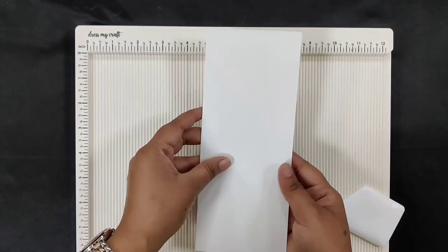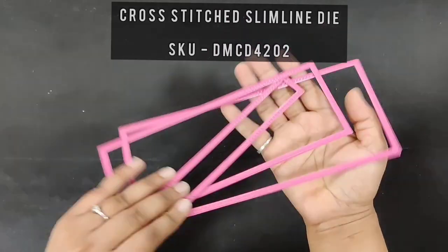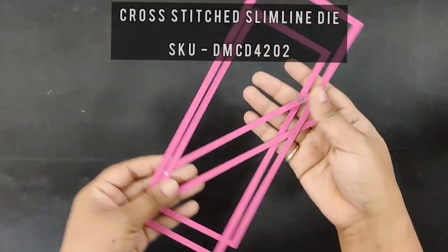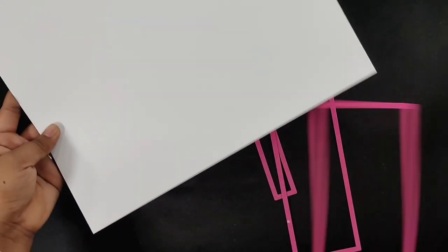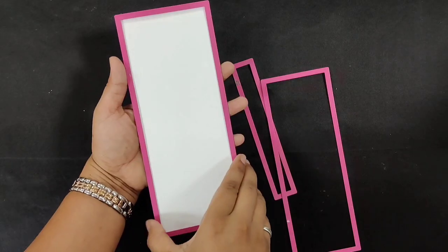Take the Cross Stitch Streamline die from Dress My Craft. Pick up the largest size from the die and die cut it on white cardstock.